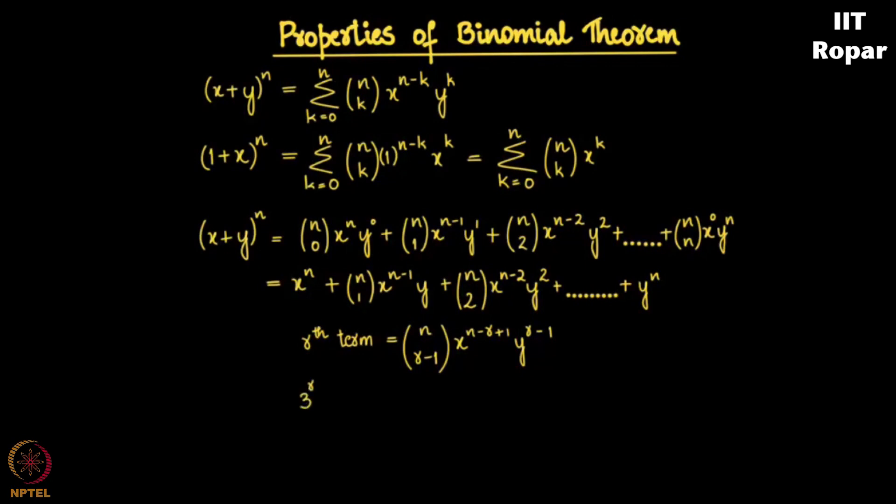Consider the third term: we had n choose 2. The third term has n choose 2, x to the n minus 2. So if I consider r to be 3, n minus 3 plus 1, minus 3 plus 1 is minus 2, and hence n minus 2 we have, and y square. Your r was 3, so you have a 2 here.